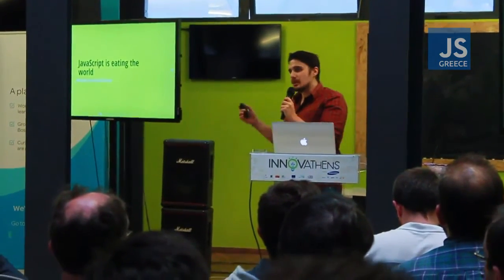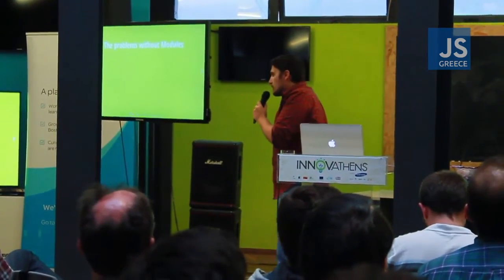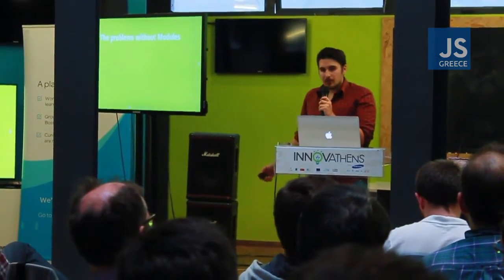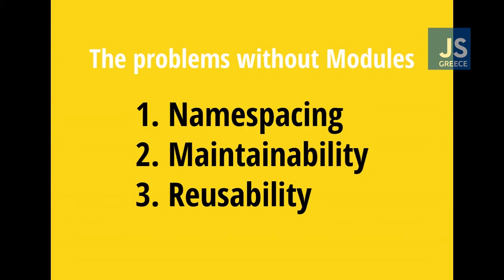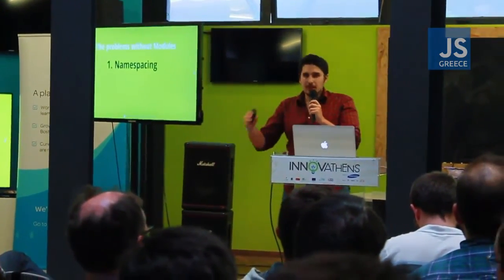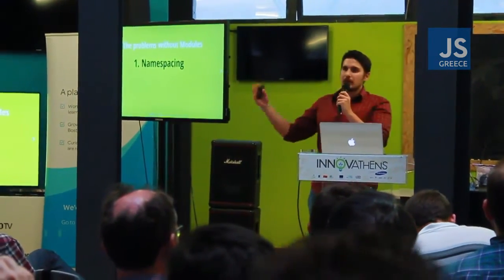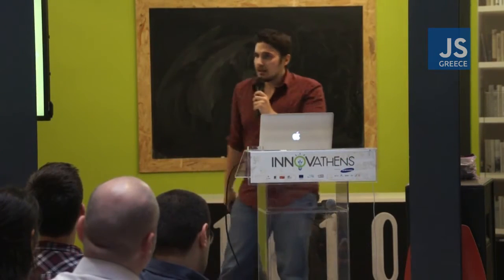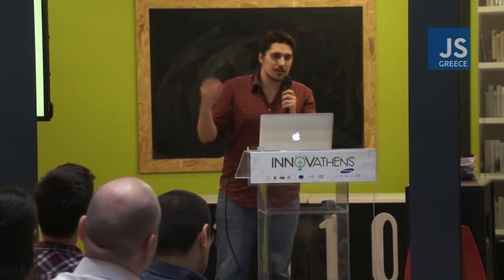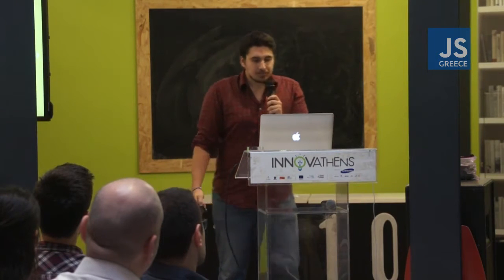The problems JavaScript had — and until very recently has — without modules: for one, everything's in the global scope by default. If you're writing a script and you write a function or a variable, that's automatically in the global scope. If you're in a bigger team and everyone's writing like this, and you're taking in third-party code written the same way, it gets crazy. How do you know what variable you're going to use? How many times will you clash with some third-party library because you're using the same name for a function? So that was one issue.